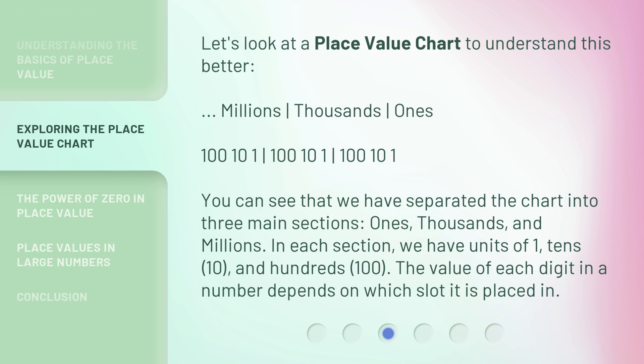In each section, we have units of 1, 10s, and hundreds — that is, 1, 10, and 100. The value of each digit in a number depends on which slot it is placed in.